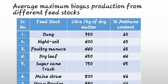Before the third method, let us look at average maximum biogas production from different feedstocks. Using dung: 60% methane content per 350 kg dry matter. Night soil: 65% methane. Poultry manure (poultry droppings): 65%. Dry leaf: 44%. Sugarcane trash: 45%. Mesh straw: 46%. And straw powder: 46% methane.